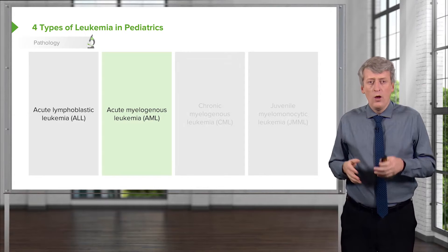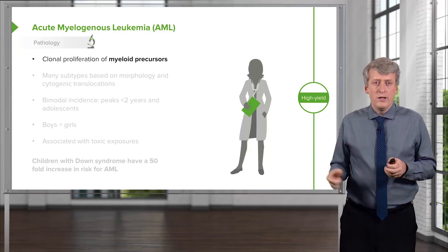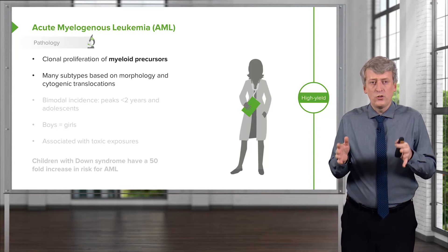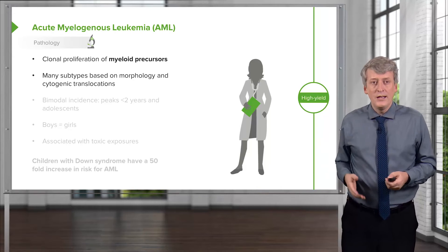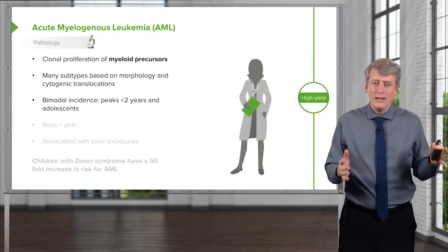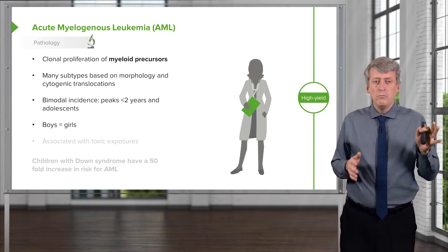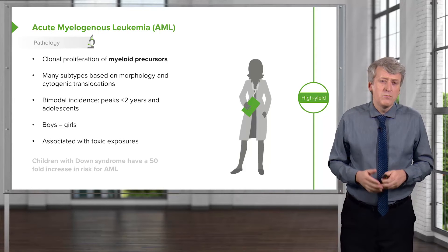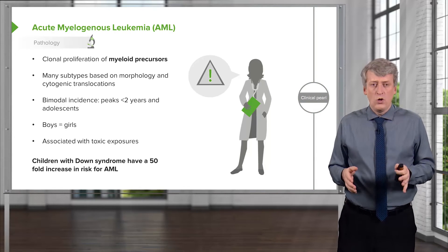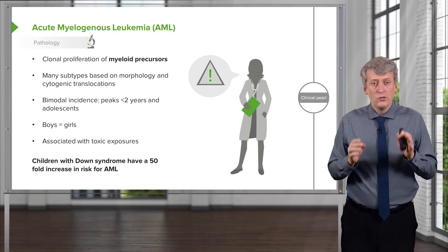Comparing that to AML, which is acute myelogenous leukemia — AML is a clonal proliferation of myeloid precursors. There are many subtypes of AML based on the morphology of the cells and the cytogenic translocations that cause these cells to become clonal. There is a generally bimodal incidence: one peak in children under two years of age, and again in adolescence. For AML, unlike ALL, the rate in boys and girls is about the same, and it is associated with some toxic exposures and genetic predispositions. For example, children with Down syndrome have a 50-fold increase in their risk for AML — a strong association.